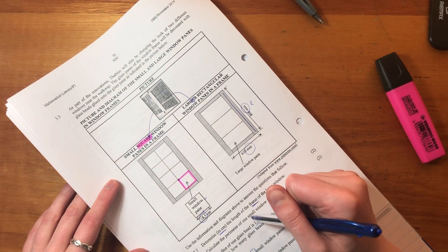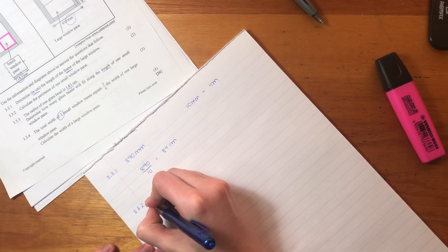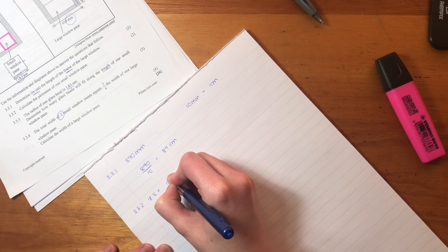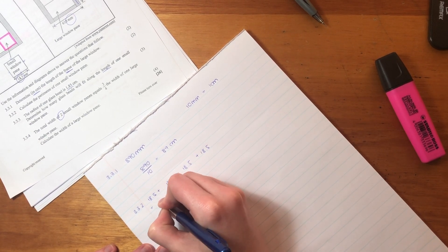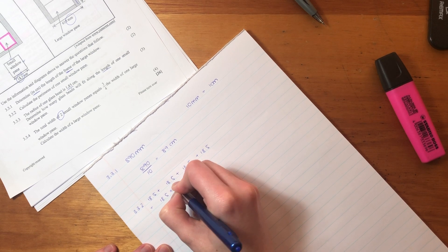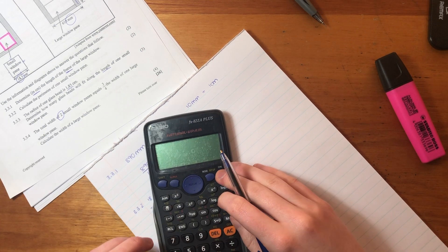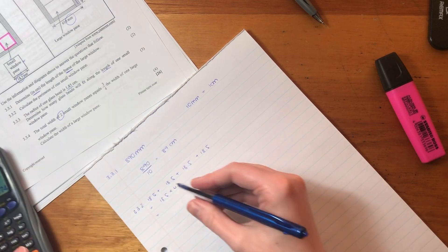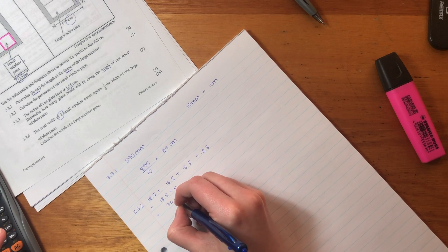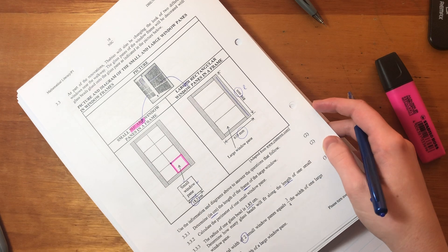So this is calculating perimeter of one small window pane. The perimeter of one small window pane is going to be 18.5 plus 18.5 plus 18.5 plus 18.5, which is the same as 18.5 times 4. If you don't understand that, you don't have to put that step in. You can just add those in your calculator and you'll get to the answer. So it is 74 centimeters for that little ant to walk around the perimeter of that window pane.